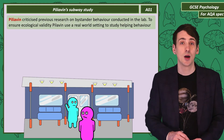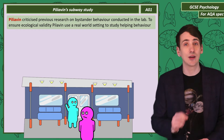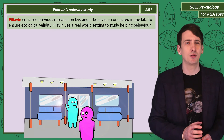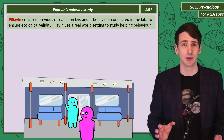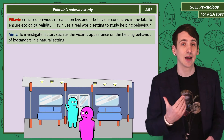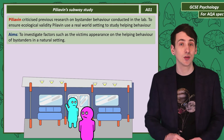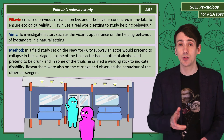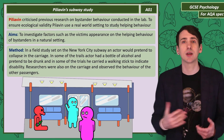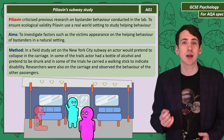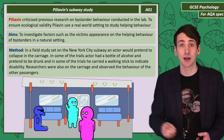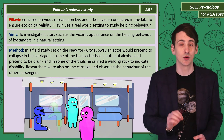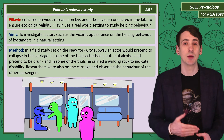So let's look at Piliavin's study. Piliavin's subway study was a field study investigating bystander behaviour. Previous research had been conducted in the lab, but Piliavin thought those studies lacked validity. Piliavin tested social factors influencing helping behaviour, such as appearance, on the New York City subway. In one carriage, an actor would pretend to collapse. In some trials the actor had a bottle of alcohol and pretended to be drunk; in others, the actor had a walking stick to suggest he was disabled. Not all other passengers were genuine — some were researchers who observed behaviour and measured how long it took for people to help the actor.